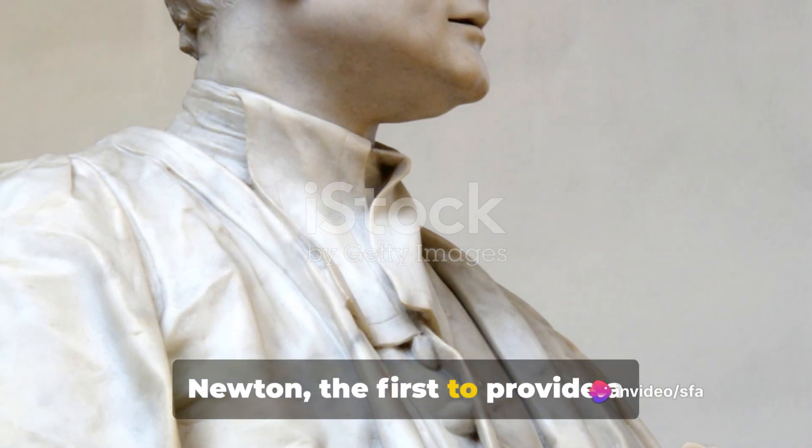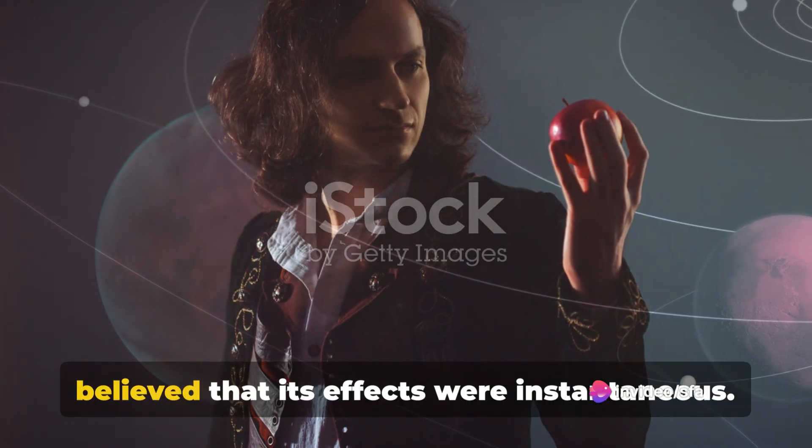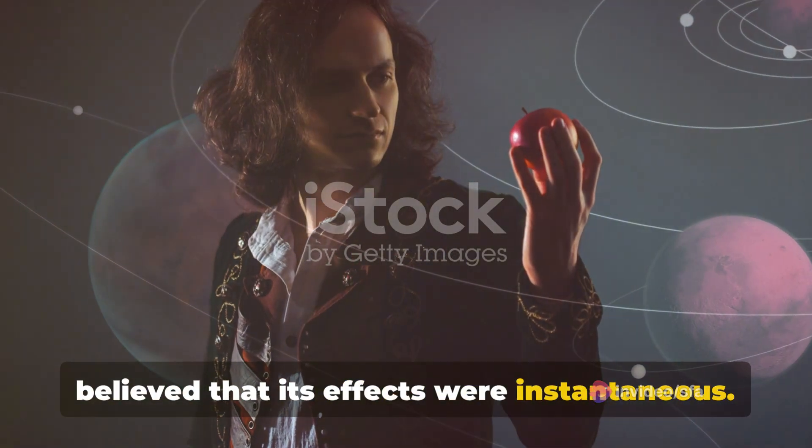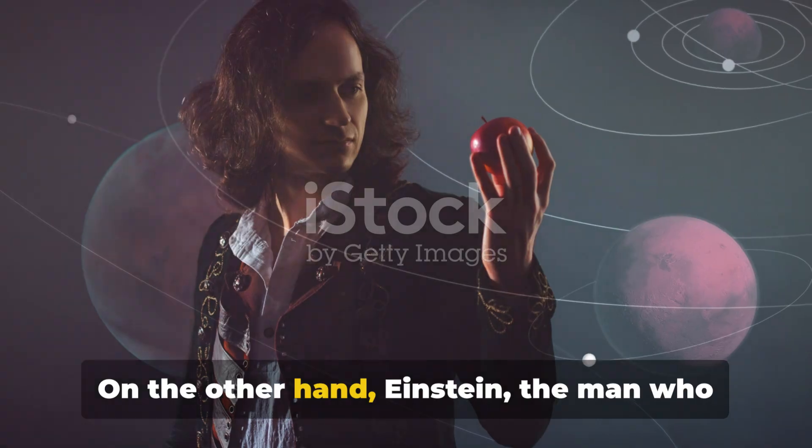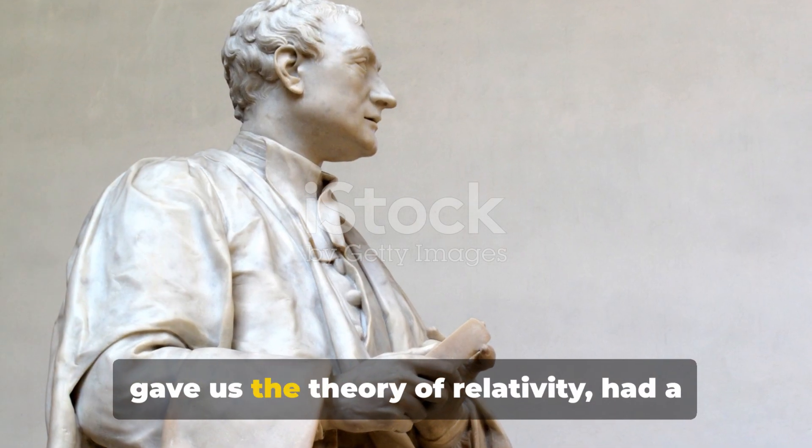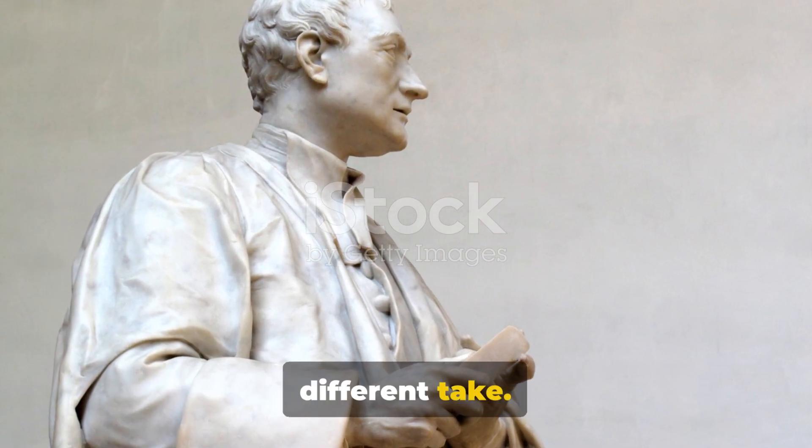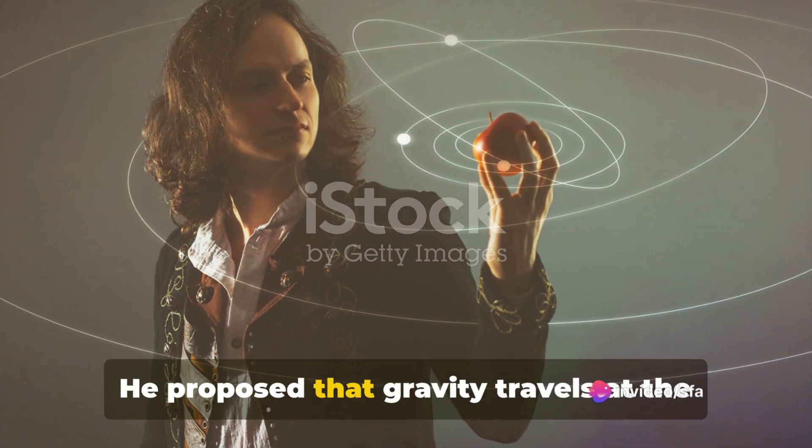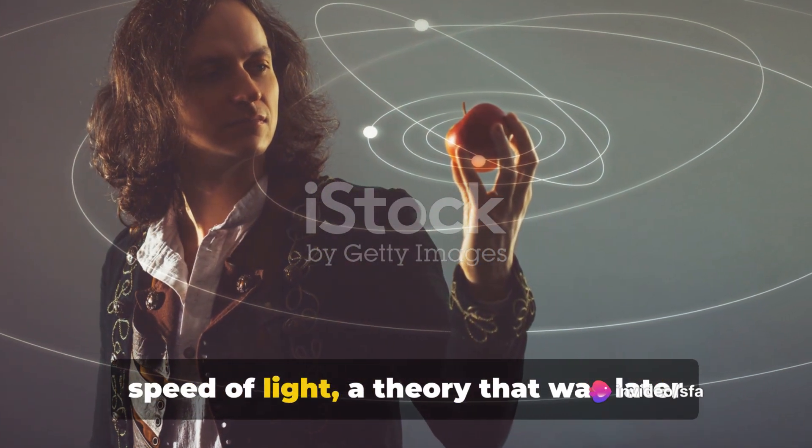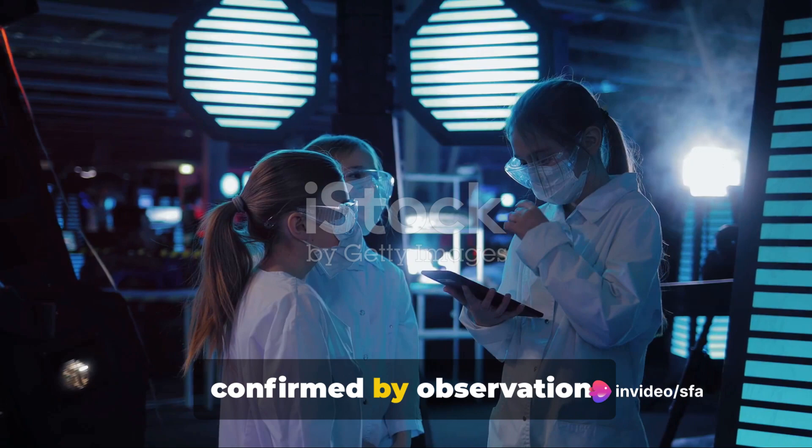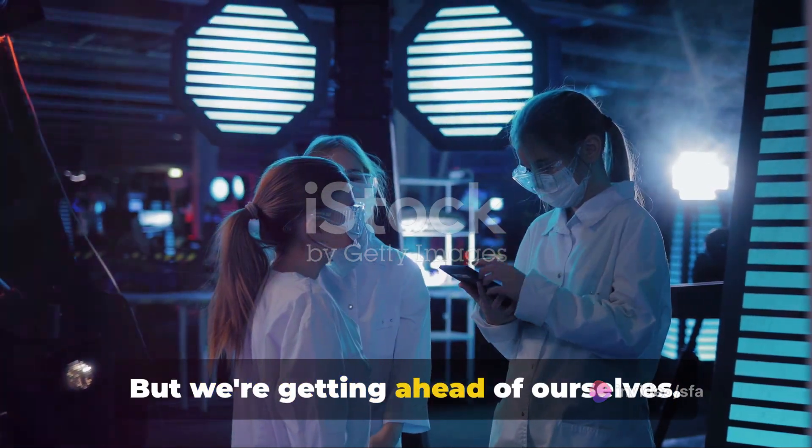Newton, the first to provide a mathematical description for gravity, believed that its effects were instantaneous. On the other hand, Einstein, the man who gave us the theory of relativity, had a different take. He proposed that gravity travels at the speed of light, a theory that was later confirmed by observation. But we're getting ahead of ourselves.